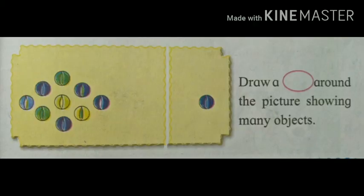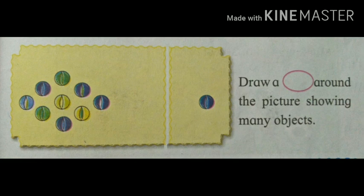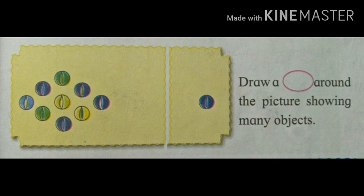Now students, here you can see some balls. Shall we count the balls? In the first picture, let's count the balls — one, two, three, four, five, six, seven, eight, and nine. There are nine balls in the first box. And in the second picture, how many balls are there? There is only one ball. So, if the object is in one number, it is one. And if the object is more than one, it is many. Nine balls are many and one ball is one.